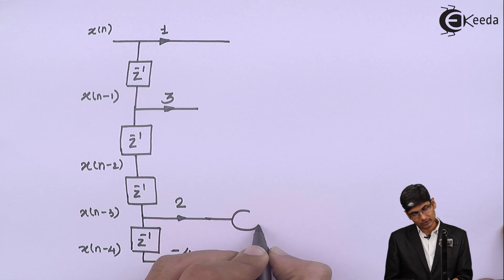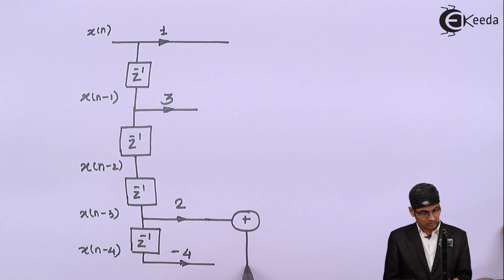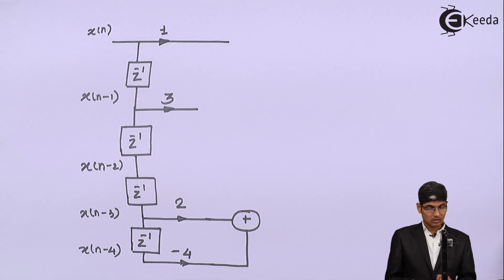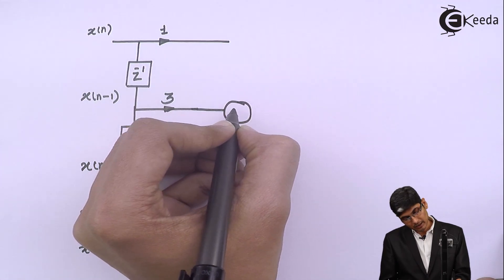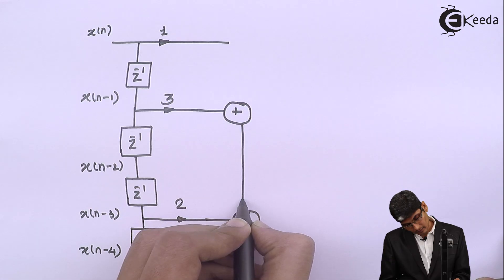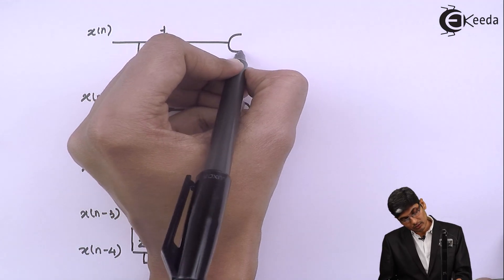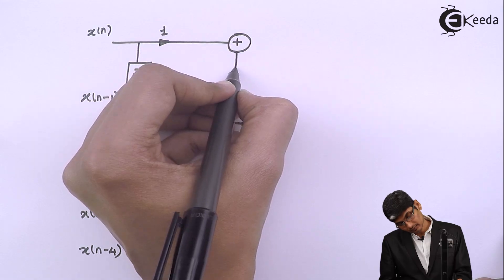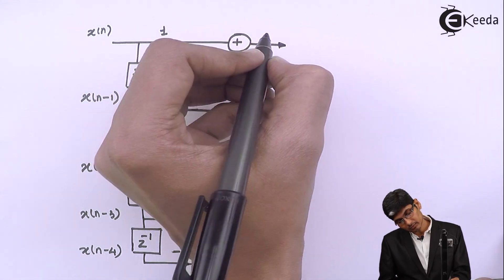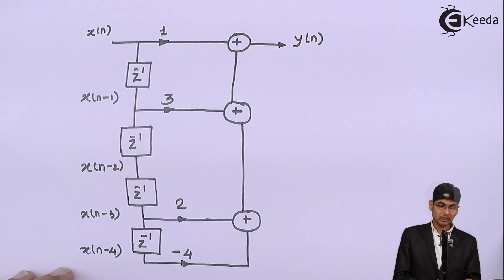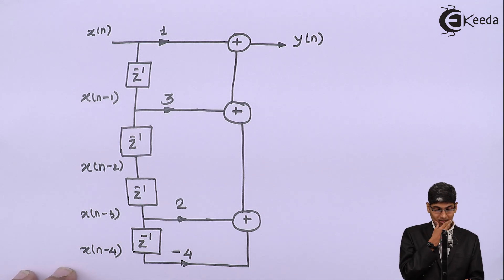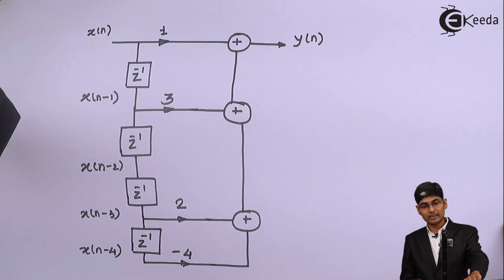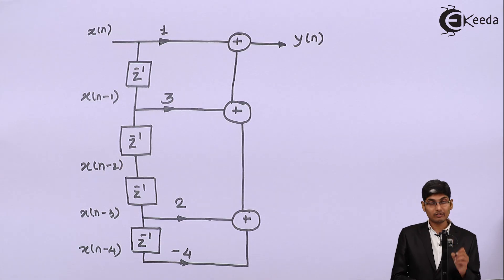So I will add these two guys first using a summing element. Then I am going to add these two guys, again using a summing element. And then finally, we are going to add them both. And this becomes my Y of N. This is one way to draw the structure. That means I will draw the Z in the sequential arm. There is one more way to draw the same structure.